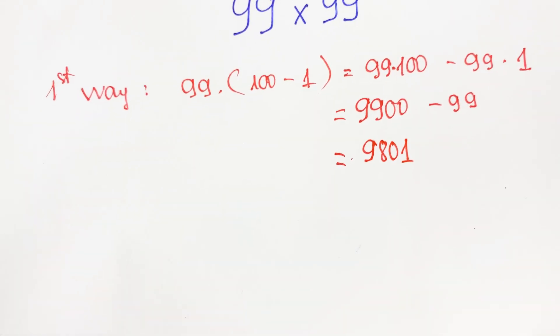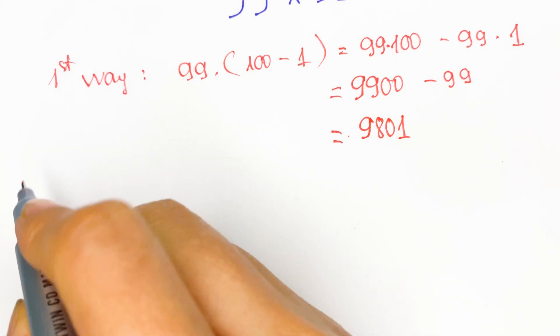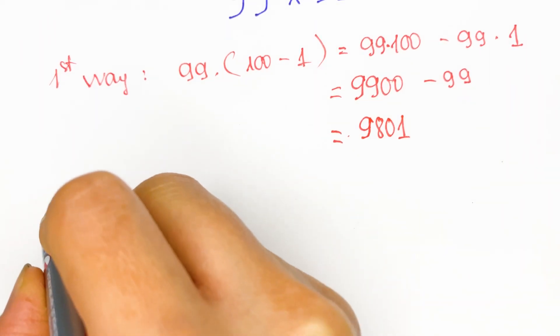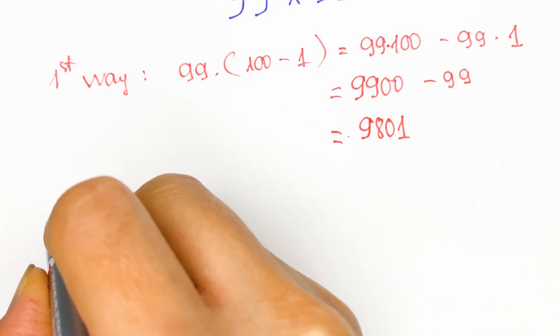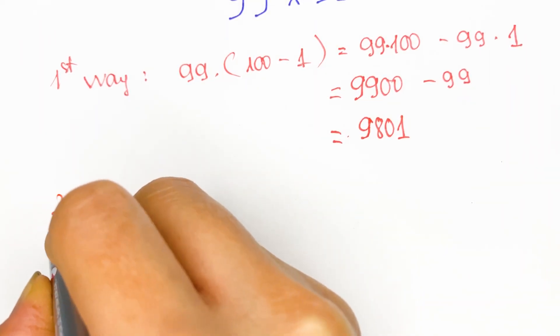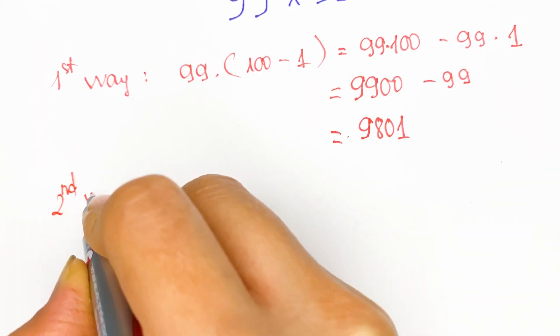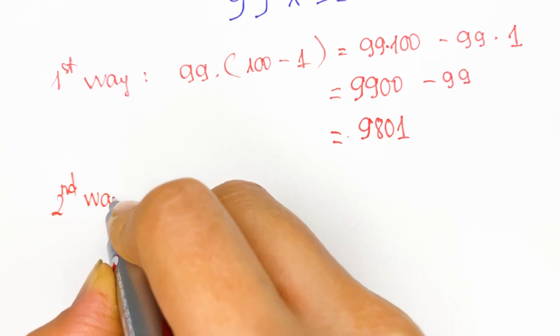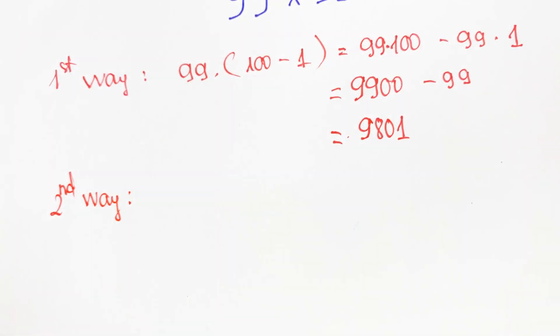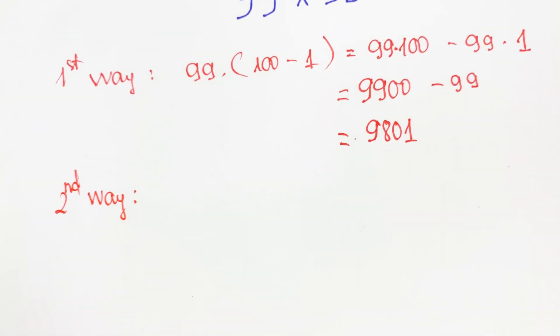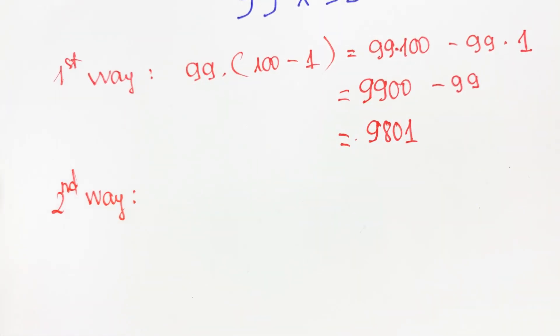The first way is so fast. Next, you can see the second way. In the second way, you can apply an identity.